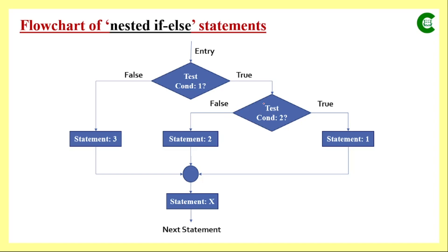Now coming back to this flowchart: if test condition 2 is false then we process statement 2. The second test condition will be checked only when the first test condition is true, but if the first test condition is false then the program flow will not go there; instead it will process statement 3. So at a time either statement 1, statement 2, or statement 3 will be executed, but whatever the result, statement X will always be executed.